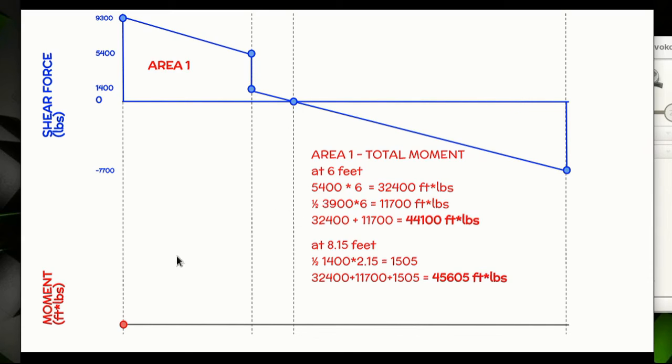The next thing we need to do is drop down below this, give yourself some room to work, and we're going to have a moment diagram starting at zero. Before we can do anything, we need to find the moment at this point and the total moment at this point. To find the moment here, we need to add up all the area under this curve. Technically this is an integral function, but we're doing this graphically. This is a rectangle that's 5,400 by 6 and a triangle that is 3,900 by 6.